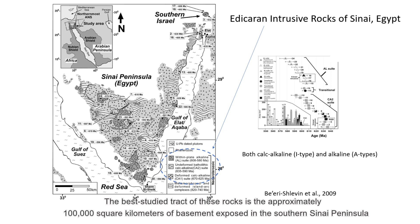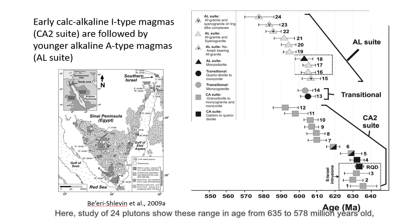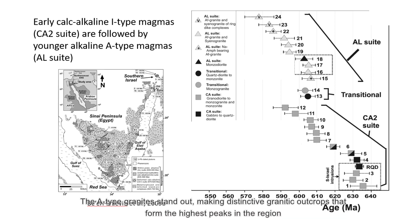The best-studied tract of these rocks is the approximately 100,000 square kilometers of basement exposed in the southern Sinai Peninsula. Here, study of 24 plutons shows that these range in age from 635 to 578 million years old, with older calc-alkaline I-types being followed by younger A-type granites. The A-type granites stand out, making distinctive granitic outcrops that form the highest peaks in the region.